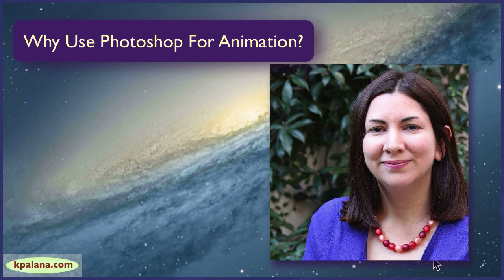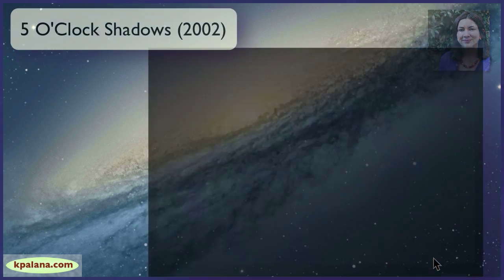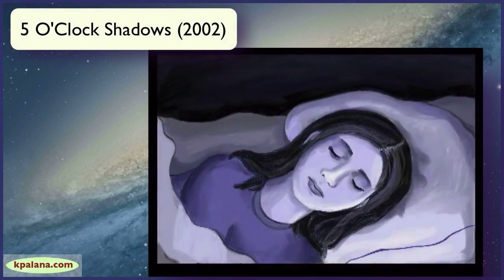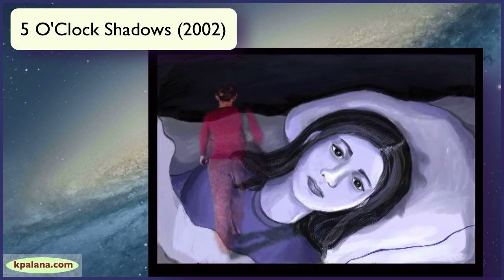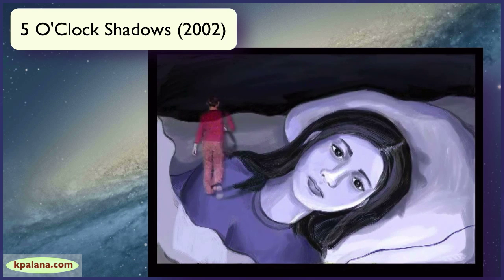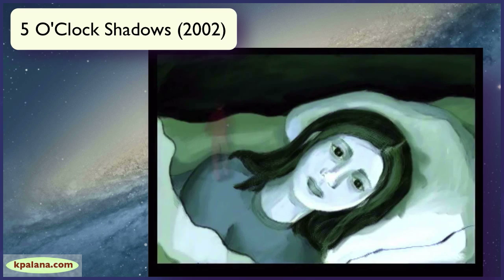With so many video editing special effects and animation programs out there, why choose Photoshop for your project? Well, I used a program called Painter and Photoshop together back in 2002 when I made my first fine art animation, 5 o'clock shadows. I used them together to create thousands of still images that I then placed frame by frame into my timeline of the video editing program Final Cut Pro.